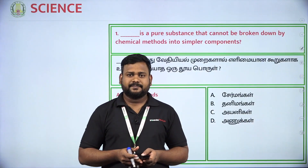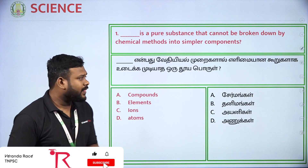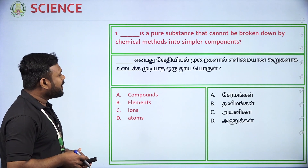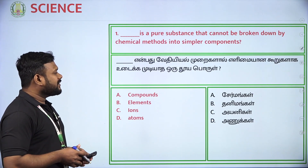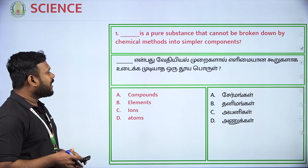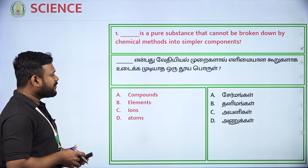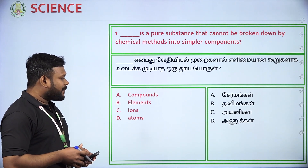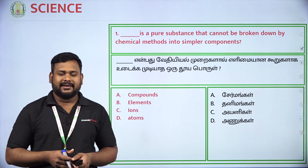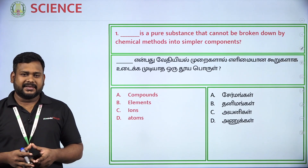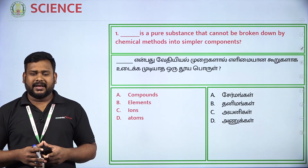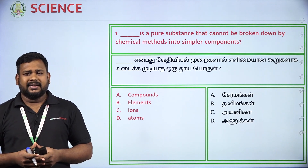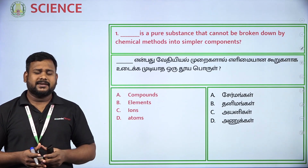First question: Dash is a pure substance that cannot be broken down by chemical methods into simple components. Options are: compounds, elements, ions, and atoms. In the book, we have a definition for the first introduction. If you look at elements, the substance that cannot be broken down by chemical methods is an element. The element is always an element. So option B — elements — is the answer.